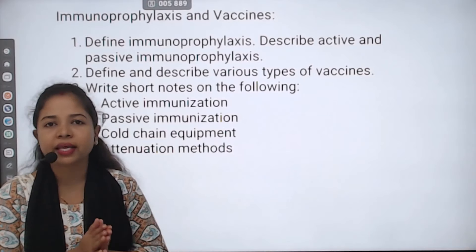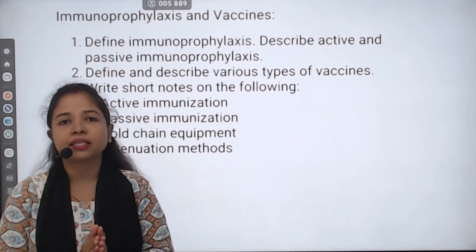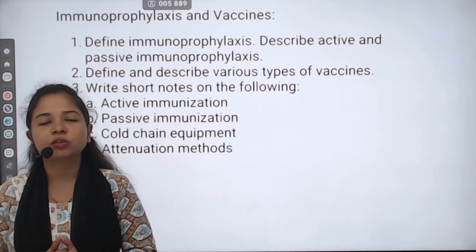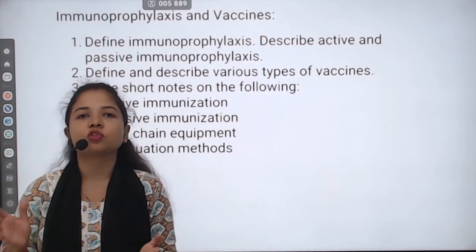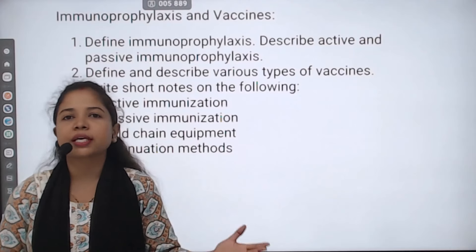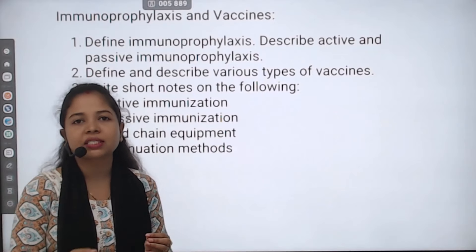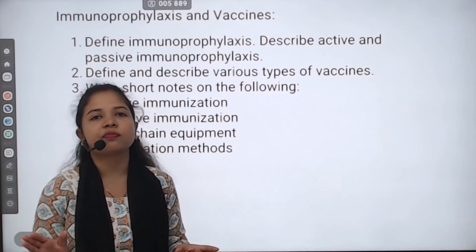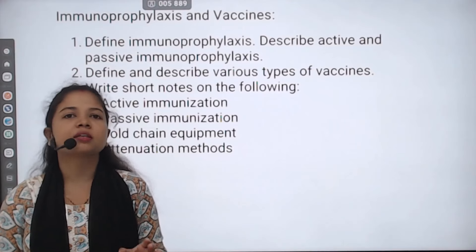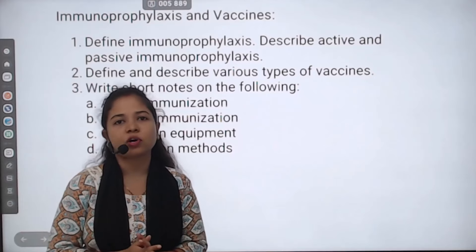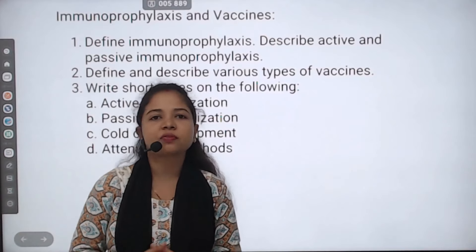Before we finish the video, a note on time management: don't write excessively long answers. In first year, a common mistake is writing very long answers for physiology topics like cells and tissue — but you don't get extra marks for that. For a long-type question, spend about 20-25 minutes; for a short answer, about 15 minutes. Manage your time well across the 3-hour paper. I hope this class is good, these important topics help you score well, and my best wishes are with you all — thank you.